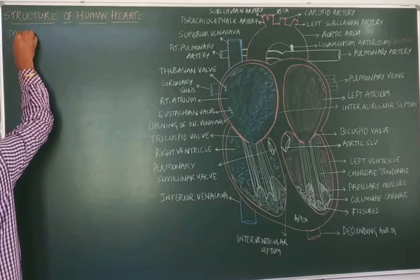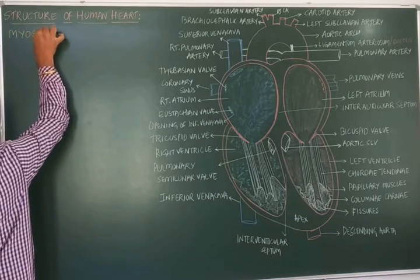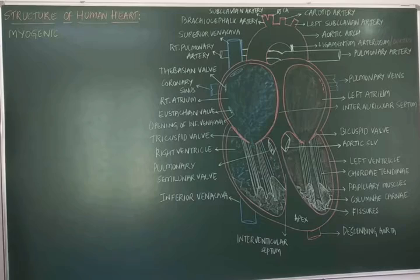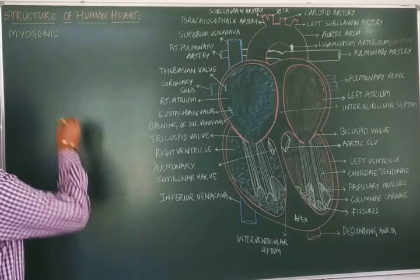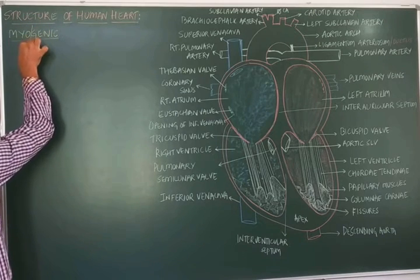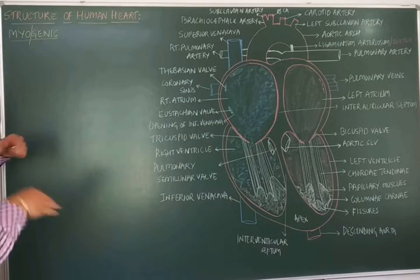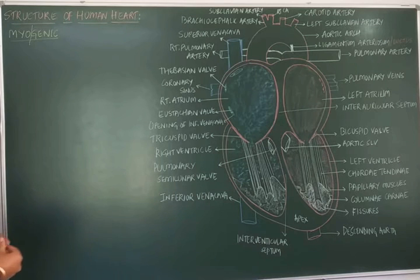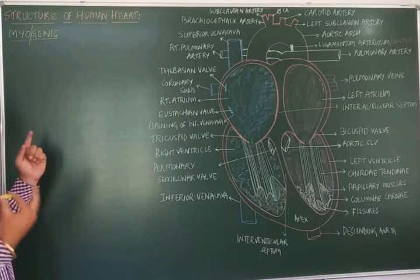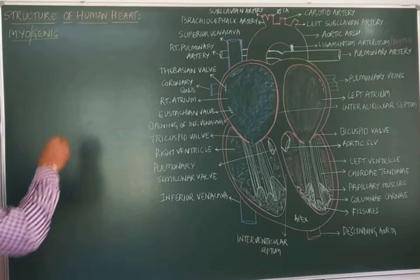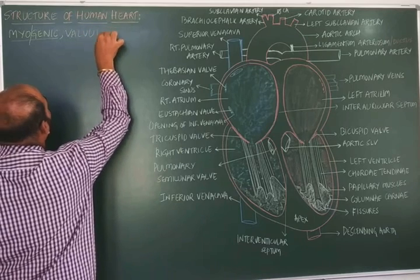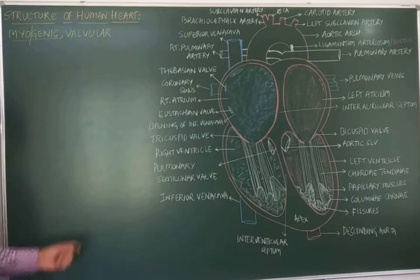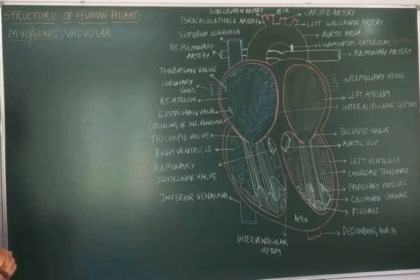The human heart is said to be a myogenic heart, where the entire heartbeat originates by the help of the muscles. The human heart is called a myogenic heart where 'myo' refers to muscles and 'genic' refers to the conduction or origin of the heartbeat. It is also regarded as a valvular heart, as it consists of many valves. So it is myogenic as well as a valvular heart.